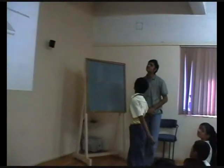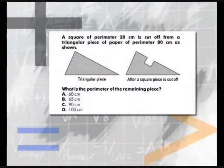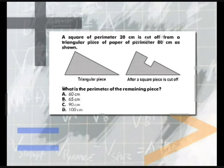It will be 60. Why? Because 20 is cut — so after 80 is cut, only 60 will be left.